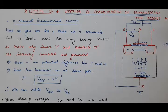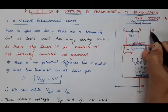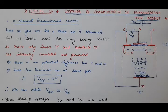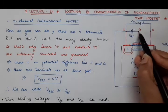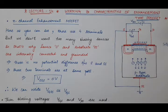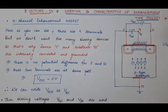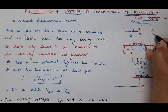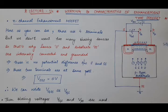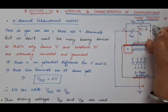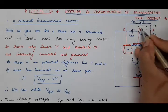Our next aim is to find the potential difference between the gate and drain terminals. We know the potential difference between gate and source, which is VGS. But we don't know the potential difference between the gate terminal and the drain terminal, so we need to calculate VGD. Suppose the potential at the gate terminal is VG and the potential at the drain terminal is VD. We have to calculate VG minus VD. For that, we use Kirchhoff's voltage law in this loop.